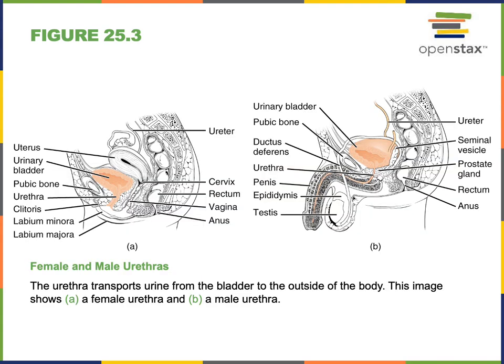The organs of the urinary system are essentially identical in males and females except for the urethra. The female urethra is shorter than the male urethra. The male urethra has three major regions: the prostatic urethra, which travels through the prostate gland; the spongy urethra, which travels through the penis; and a short region in between known as the membranous urethra.